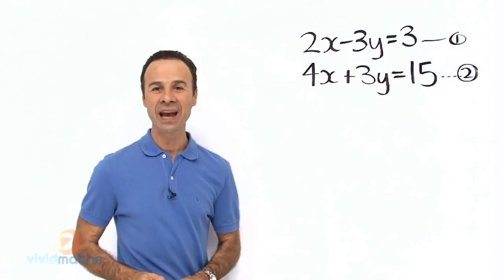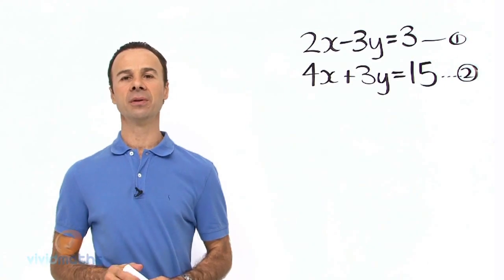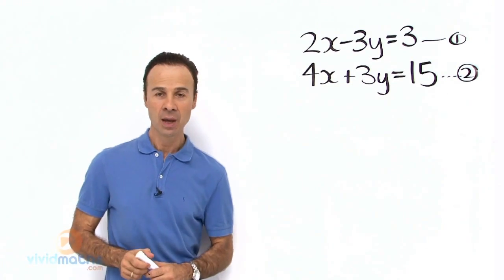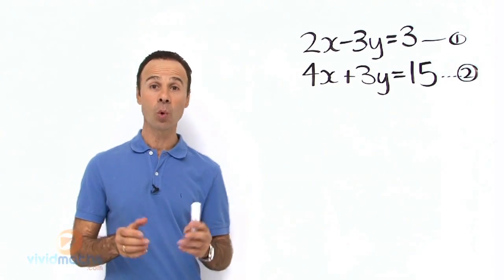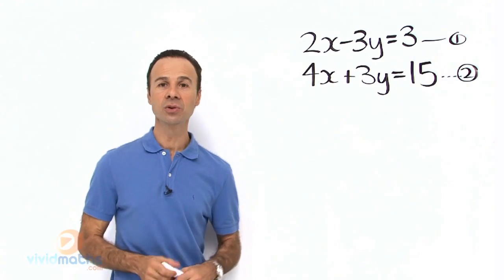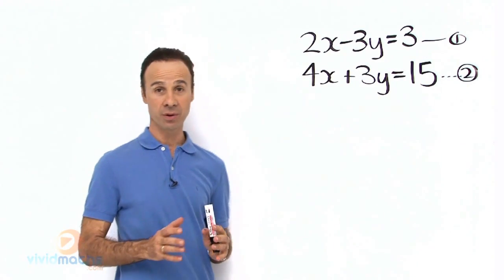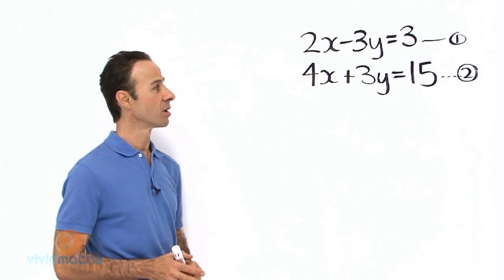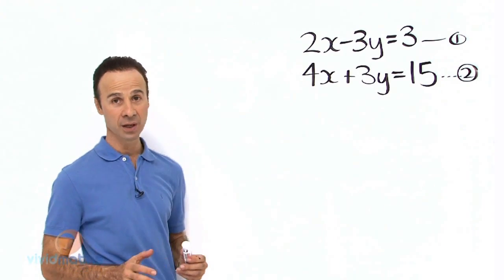Ok guys, let's engage with the elimination method. That's a different method to substitution. In this particular method we eliminate one of the pronumerals. So let's do this lesson. Here we have 2x - 3y = 3 and 4x + 3y = 15.